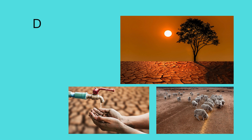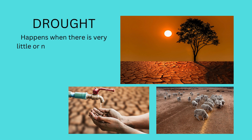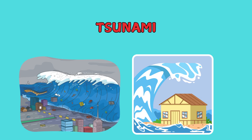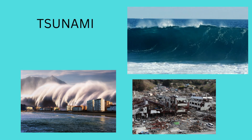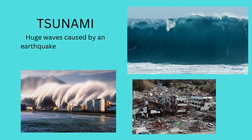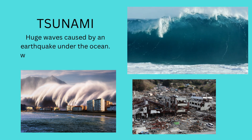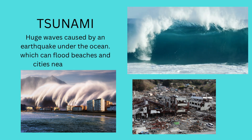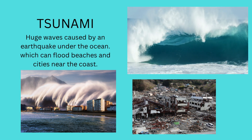Drought. A drought happens when there is very little or no rain for a long time, and plants and animals can run out of water. Tsunami. A tsunami is a huge wave caused by an earthquake under the ocean, which can flood beaches and cities near the coast.